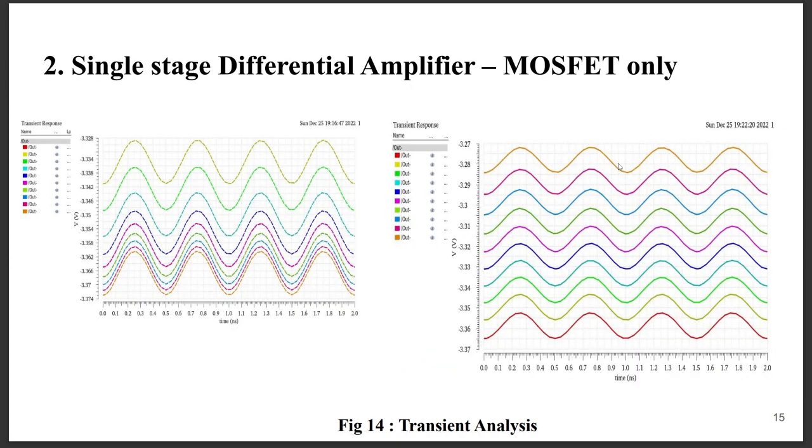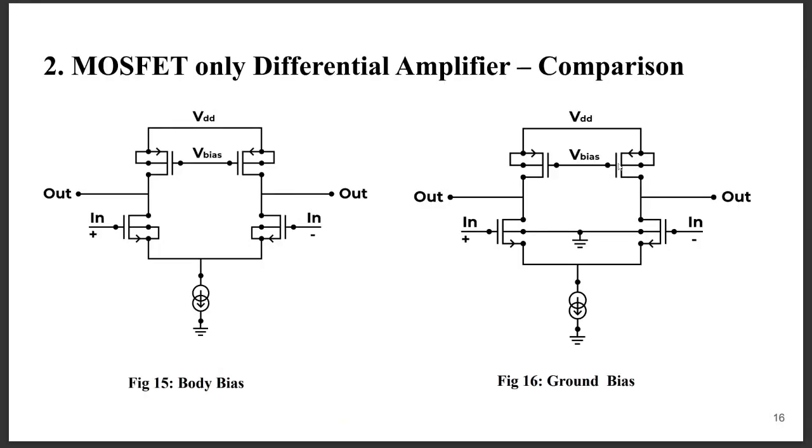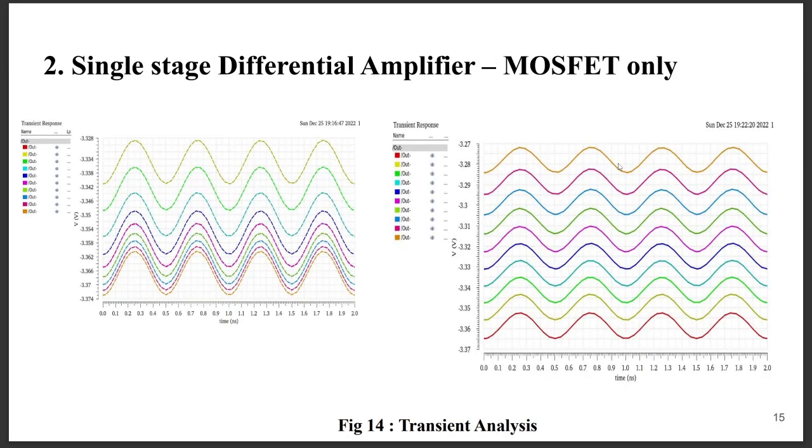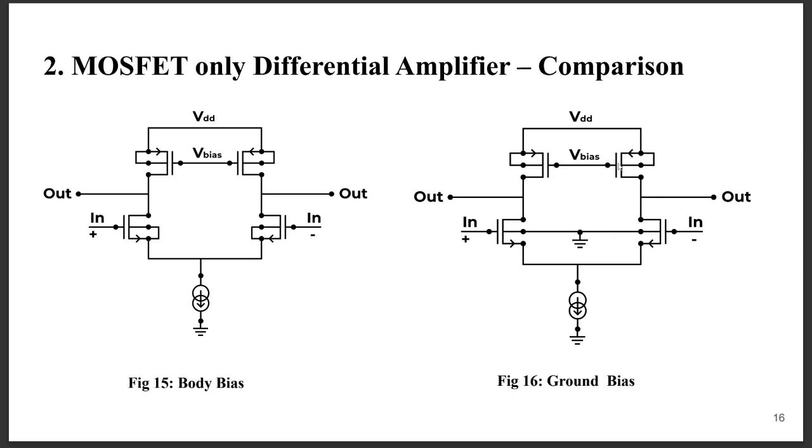As we can see, this is some of the transient analysis that we have done. The major problem of this circuit, even though we have done a lot of analysis, we could not conclude much of a good result. As a result, we moved on to the next. In this circuit configuration we have grounded the body pins of the two NMOS. This is the final design parameter that we received.